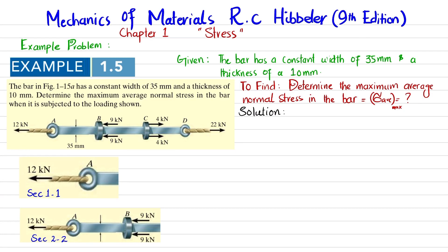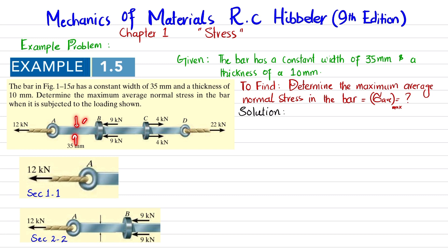Welcome back. In this video we are going to solve example problem 1.5 from chapter 1, Stress, in the book Mechanics of Materials by R.C. Hibbeler 9th edition. The bar in figure 1.15a has a constant width of 35 millimeters and thickness of 10 millimeters. Determine the maximum average normal stress in the bar when it is subjected to the loading shown. This bar has different sections with different point loads at different points.